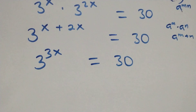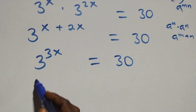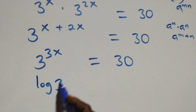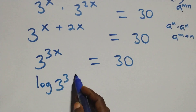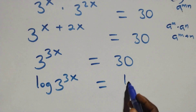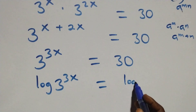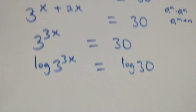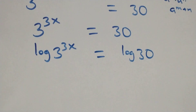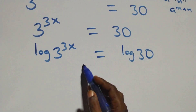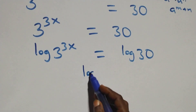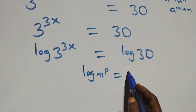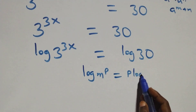Here we take the log on both sides. We have log of 3 raised to power 3x equals log 30. The next step, we apply the power rule of logarithms: when we have log m raised to power p, this is the same as p times log m.